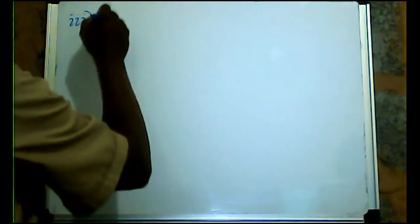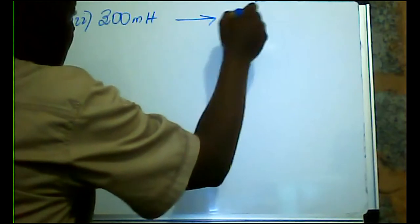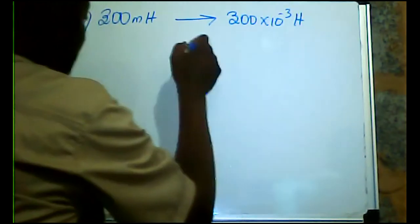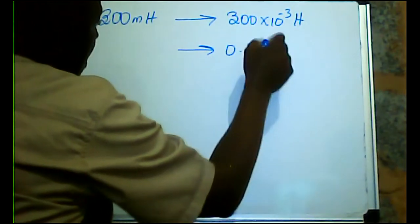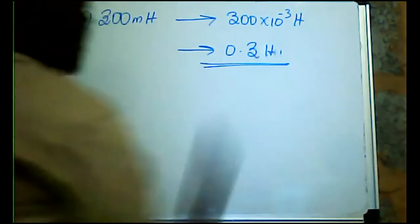Number three: convert 300 millihenrys to SI units.